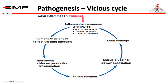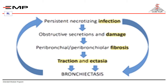It is a vicious circle in its pathogenesis. The triggering factor, which is lung inflammation, causes mucus production with decreased cellular and chemical defense mechanisms. This makes pulmonary defense inefficient, leading to chronic lung infection, increased mucus production and inflammation. Mucus will be retained, causing mucus plugging and airway obstruction, more lung damage, and more inflammatory response, causing chronic infection and so on. We have persistent infection, obstructive secretion, damage, and peribronchial fibrosis causing traction and ectasia of the bronchial tree, resulting in bronchiectasis.